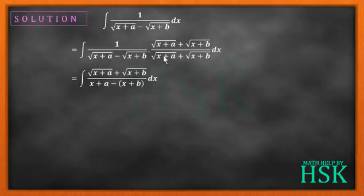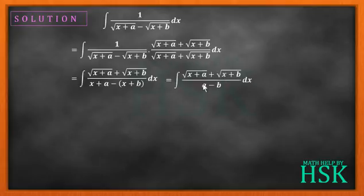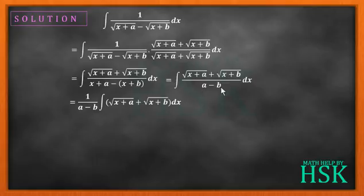The square root of (x plus a) squared becomes x plus a, and square root of (x plus b) squared becomes x plus b. The x terms cancel out, giving us the integral of [square root of (x plus a) plus square root of (x plus b)] upon (a minus b) dx.